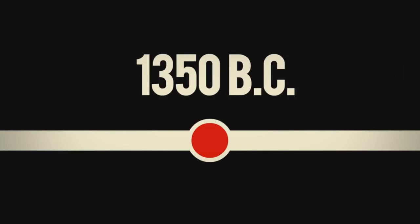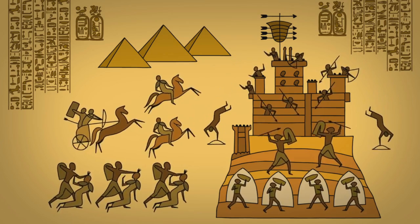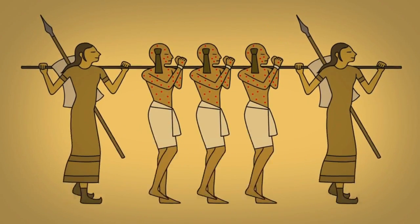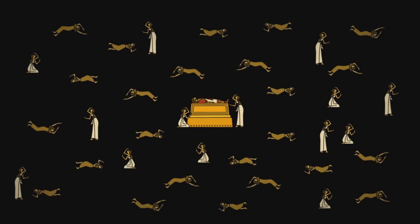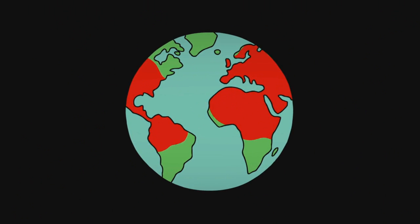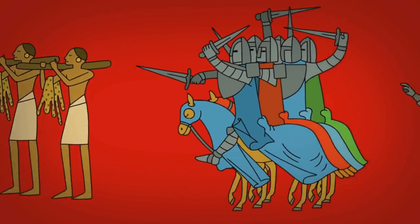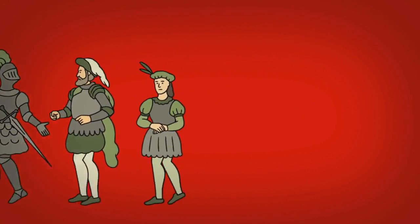Smallpox had arrived. In 1350 BC, the first smallpox epidemics hit during the Egypt-Hittite War. Egyptian prisoners spread smallpox to the Hittites, which killed their king and devastated his civilization. Insidiously, smallpox made its way around the world via Egyptian merchants, then through the Arab world with the Crusades, and all the way to the Americas with the Spanish and Portuguese conquests.